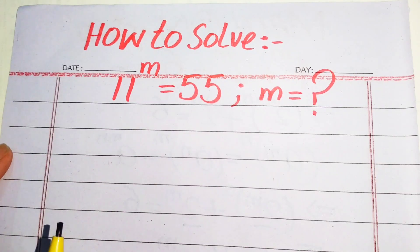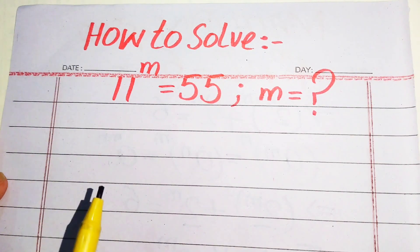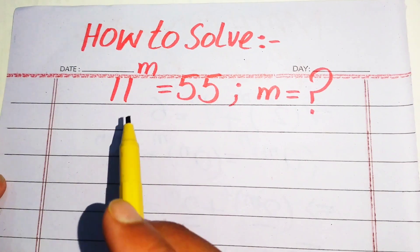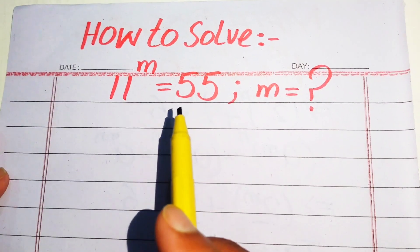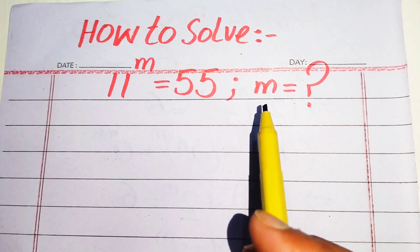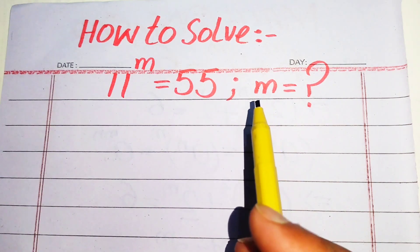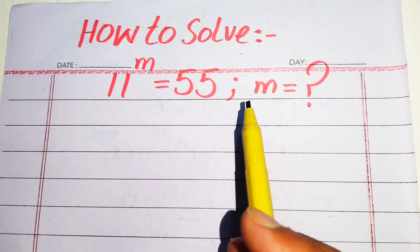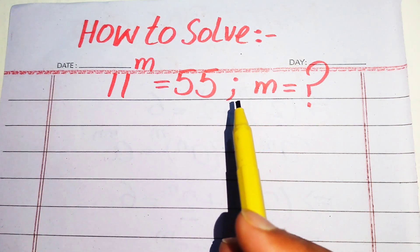Hello everyone, welcome to solve this math Olympiad algebra problem. Here we have 11 to the power of m equals 55, and we solve for the value of m without using the calculator.